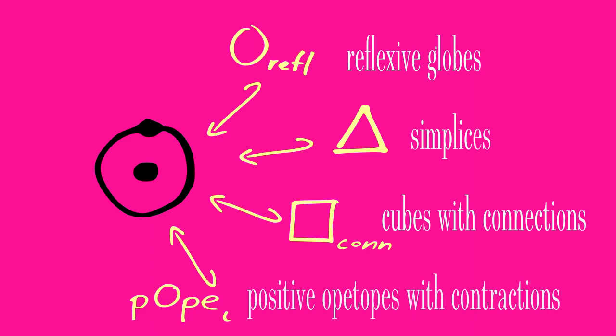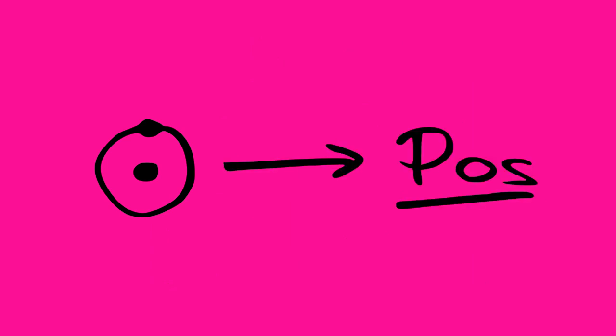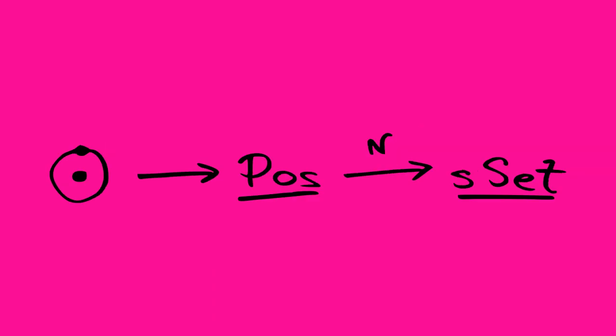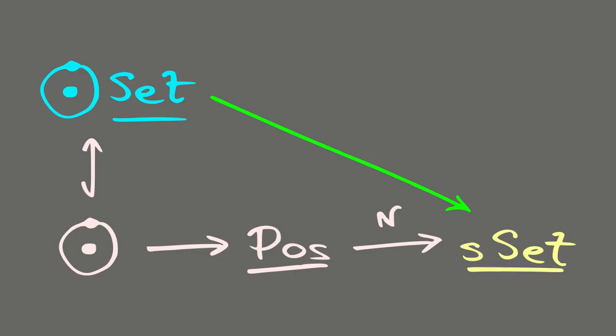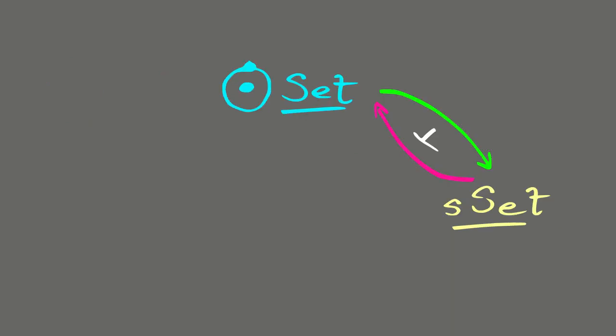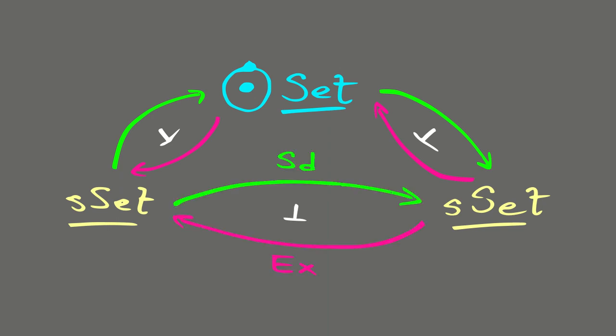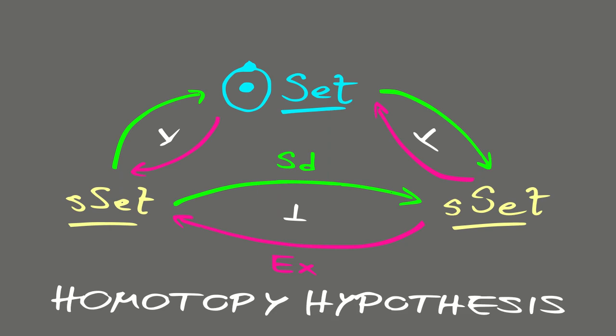Importantly, maps of atoms are order-preserving, so we get a forgetful functor to the category of posets. We can compose these with the simplicial nerve functor, then do a left Kan extension. This gives us one adjunction between diagrammatic sets and simplicial sets. Restriction to the simplex category together with its left adjoint gives another adjunction. The composite of these two adjunctions, up to natural isomorphism, is the barycentric subdivision ex-functor adjunction on simplicial sets.